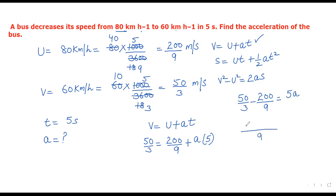Taking LCM of 9: (150 - 200)/9 = 5a. This gives -50/9 = 5a.